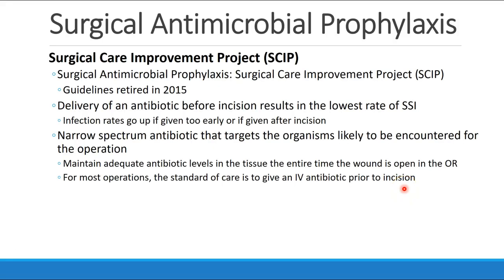There was a project called SCIP, the Surgical Care Improvement Project. It was retired in 2015, but these guidelines still persist in a lot of common OR practice. One of the components of SCIP was Surgical Antimicrobial Prophylaxis — the idea of giving perioperative antibiotics. They wanted to standardize delivery of an antibiotic before incision in order to achieve the lowest rate of surgical site infection. The goal is to give narrow-spectrum antibiotics that target the organisms most likely to be encountered during the operation and maintain adequate antibiotic levels in tissue the entire time the wound is open.